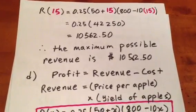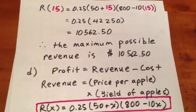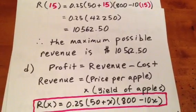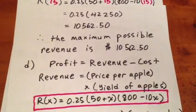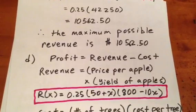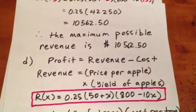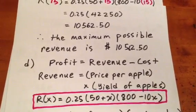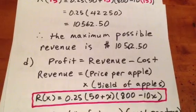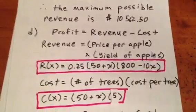The question then gets even more complicated. It tells us about the cost to the orchard owner of maintaining all the trees. Specifically, it says that for every tree that the orchard owner chooses to grow, it's going to cost her $5 in maintenance.